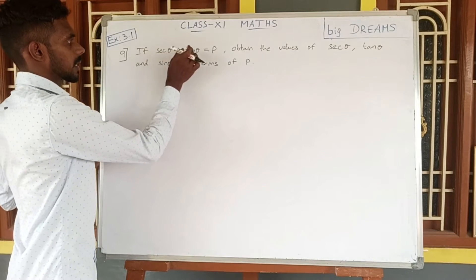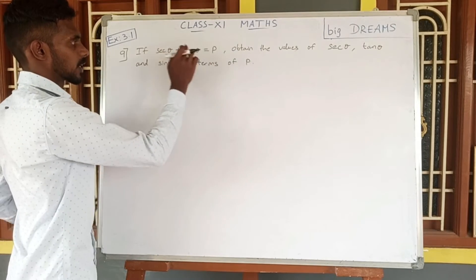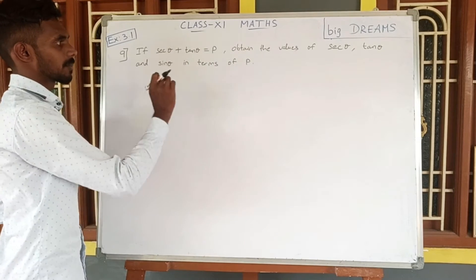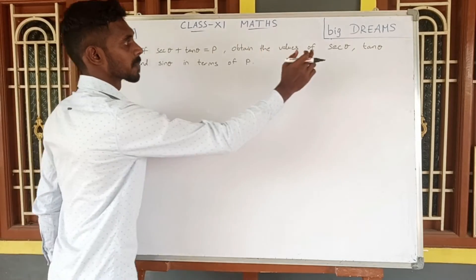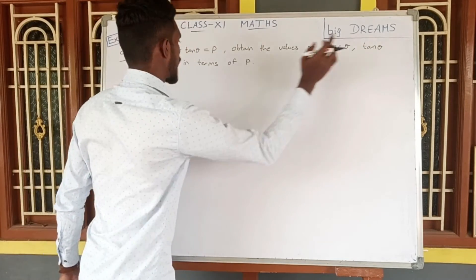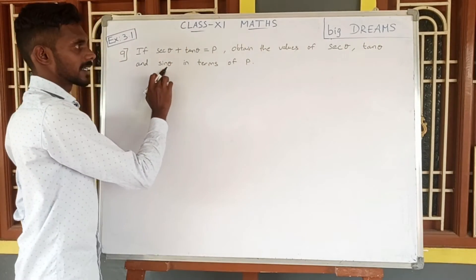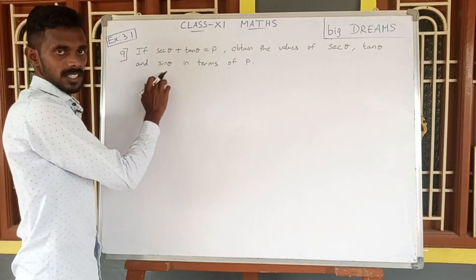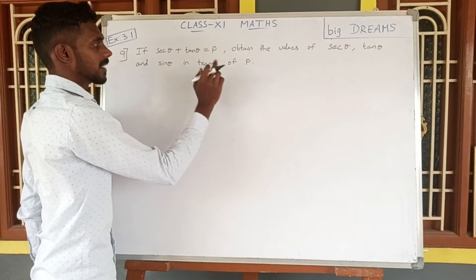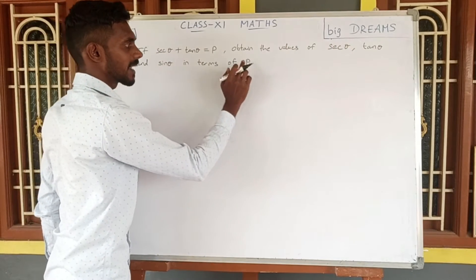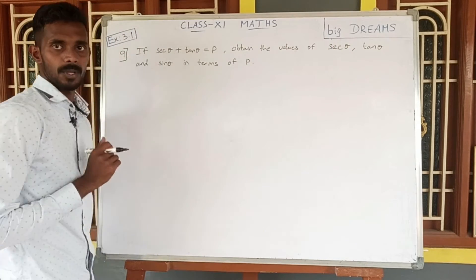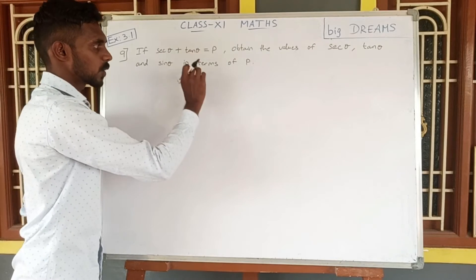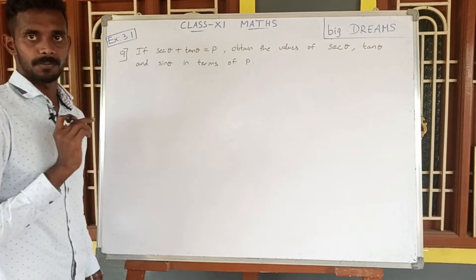P is equal to secant theta plus tan theta — this is the given condition. We need to find secant theta, tan theta, and sin theta. These three trigonometric functions need to be expressed in terms of P.